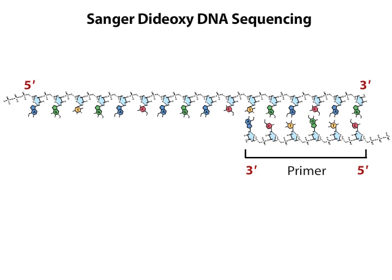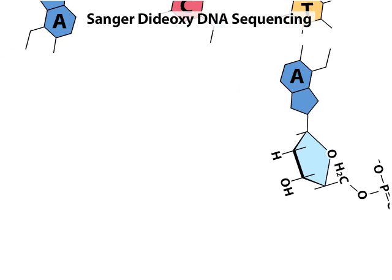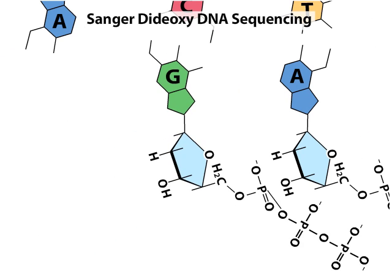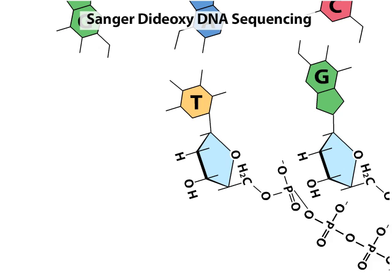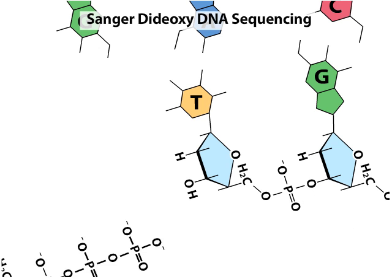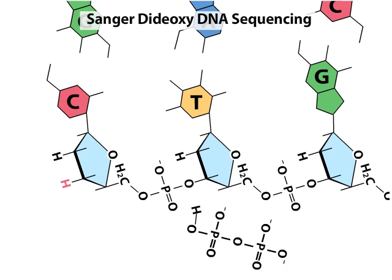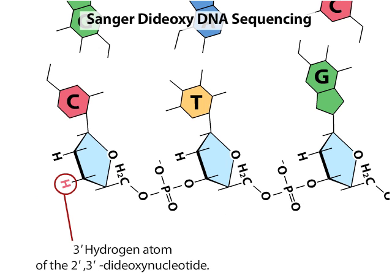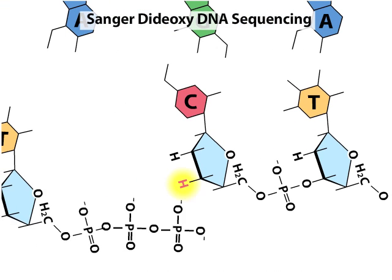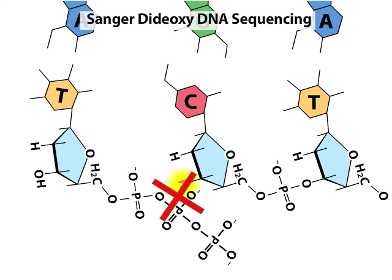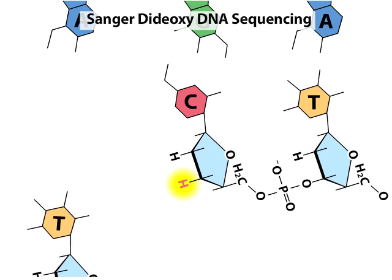Each newly added nucleotide provides a 3' OH group on which to add another nucleotide. In dideoxy sequencing, a small amount of synthetic nucleotides called dideoxynucleotides are added to the reaction mixture. A dideoxynucleotide has a hydrogen atom rather than a hydroxyl group on its 3' carbon, and cannot form a phosphodiester bond with another nucleotide, and thus terminates the chain.